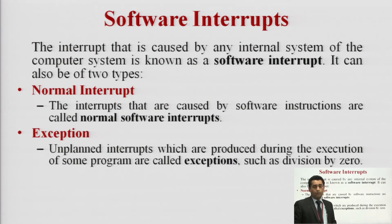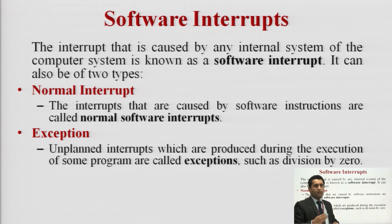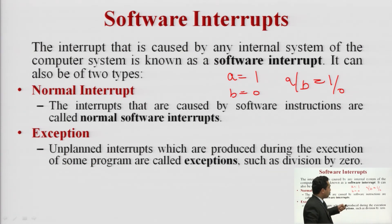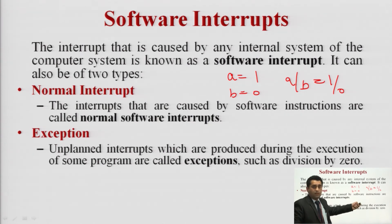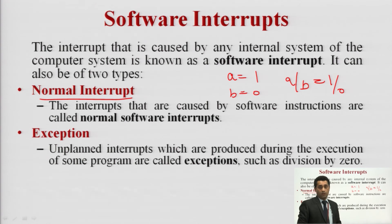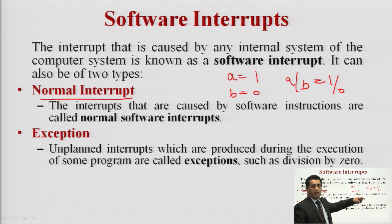Software interrupts are generated due to programming code — for example, divide by zero, where a=1, b=0, and we compute a divided by b, which gives 1 divided by 0. In this case, the hardware cannot handle it; this is a software error in the code. A pop-up message comes to the screen, which falls into the software interrupt category. This is known as a normal interrupt — if there is an issue in the code or a prompt message is generated.